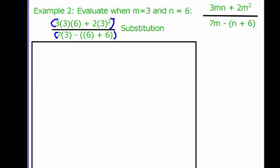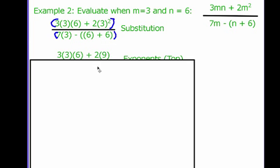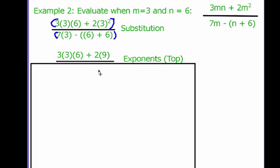I'm going to go through the order of operations up top and on the bottom at the same time. If we look up top, our first step is that we have an exponent, 3 squared, and that gives us 9.